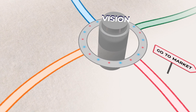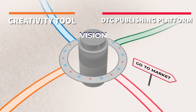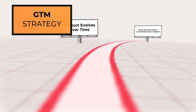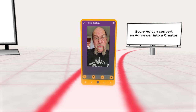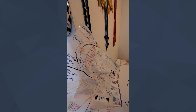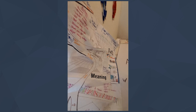As we head into the juncture of our journey, we can summarize Instagate as a creativity tool and a DTC publishing platform. As we begin our GTM journey, what Instagate is today will be different than what it evolves into tomorrow or the next day. Our core strategy is that for every ad we distribute, we can convert an ad viewer into a creator.